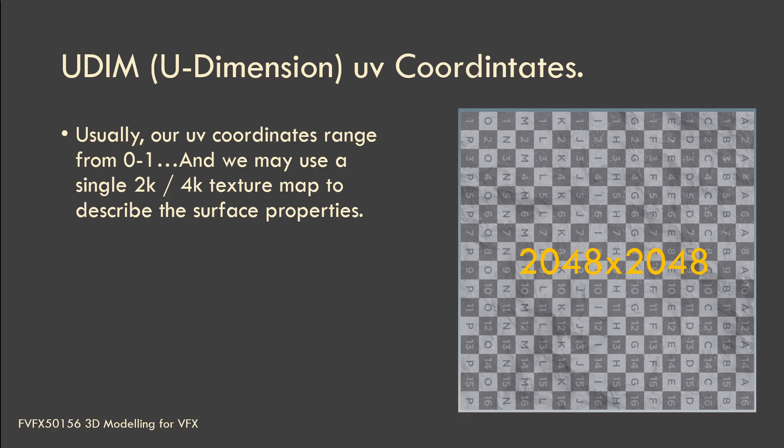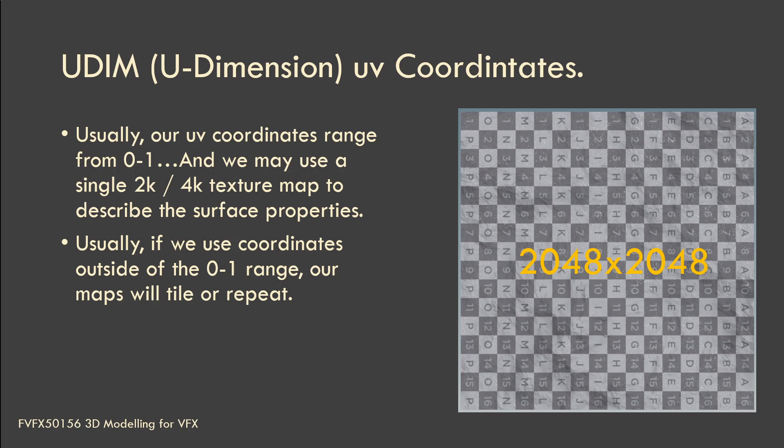For this terrain, we could use a single 2K texture map to represent the diffuse texture, displacement, normal map, roughness map, and specularity. You can bump up to 4K or 8K depending on what you're trying to achieve. Usually, if we stray outside that zero-to-one range, the texture will start to repeat — which can be useful if you're using tiling textures or working in real time and trying to save space.